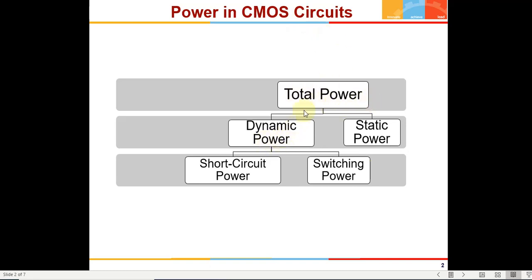The total power can be classified into two types. One is known as static power — that is when there is no variation in the input, the input is static with no change. Dynamic power is that power when the input is changing, there is a transient switching in the input waveform. Dynamic power is again classified into two: short circuit power and switching power. We will spend a minute on each of these so that we know how to measure it accurately.